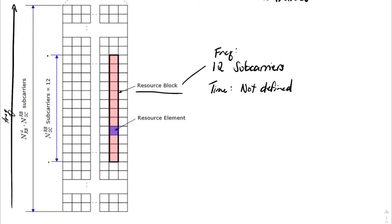5G separates things in frequency and time with different components. A subframe is one of the time components, and it's called a 'subframe' because there's also a frame, which is 10 milliseconds — so there are 10 subframes in a single frame. This diagram is actually slightly inaccurate; it's more showing a concept. There's also a concept called a SLIV in 5G, which defines a resource block — or RB, or PRB for physical resource block — in the time domain for resource allocation purposes.